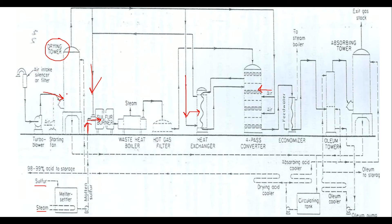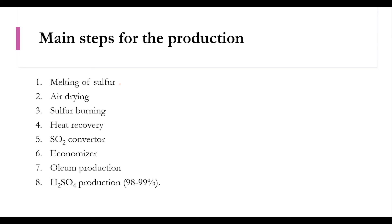Air coming out of the drying tower is partially sent through a heat exchanger. At a mixing junction, the fresh air from the drying tower and the air coming from the heat exchanger are both mixed and then sent to the sulfur burner. So we have covered the melting of sulfur and the drying of air, and now the sulfur will be burned in the process.